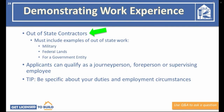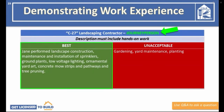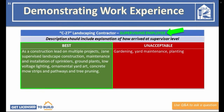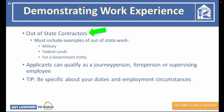Our next example is for the C-27 landscaping contractor. A good certifier description would be: 'Jane performed landscape construction, maintenance and installation of sprinklers, ground plants, low voltage lighting, ornamental yard art, concrete mow strips and pathways, and tree pruning.' An unacceptable description would be simply: 'gardening, yard maintenance, planting.' For a C-27 foreperson, the description should indicate overseeing other staff performing the trades. For a supervising employee, include an explanation of how you arrived at the supervisor level. For out-of-state work, include examples of out-of-state, military, federal land, or government entity work.